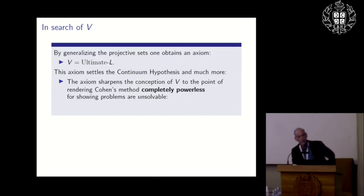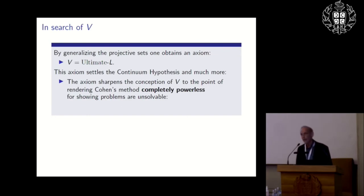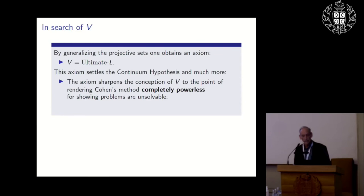By generalizing the projective sets one obtains an axiom: V is Ultimate L. The L here is related to Gödel's universe but is an ultimate version. This axiom settles the continuum hypothesis and much more; it sharpens the conception of V to the point of rendering Cohen's method completely powerless. Not only does this axiom solve things like CH — augmented by large cardinal axioms it basically solves all the questions which Cohen's method has been used to show are unsolvable. More precisely, any Cohen blueprint for the axiom V is Ultimate L must be trivial.